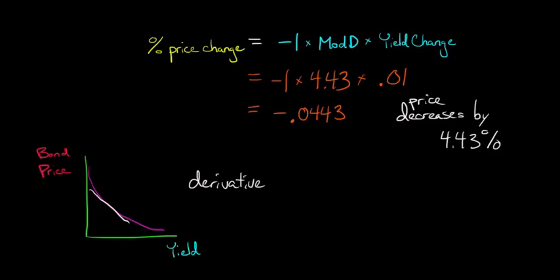We can say that the modified duration is the derivative of the bond's price with respect to the yield. So a higher modified duration is going to imply that the bond price is going to be more sensitive to changes in the yield.